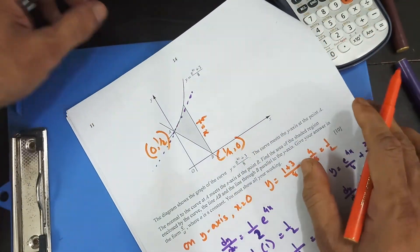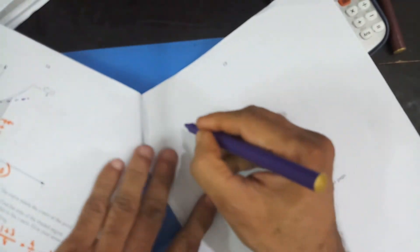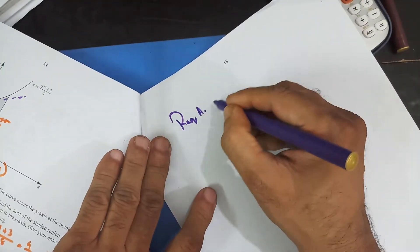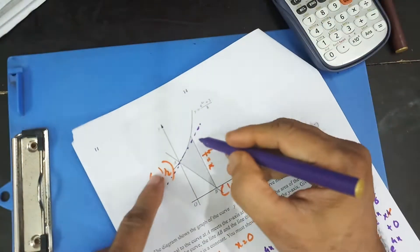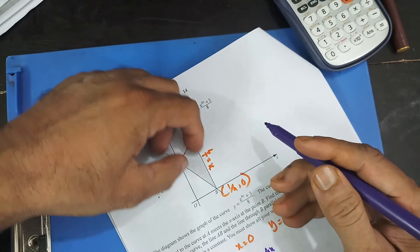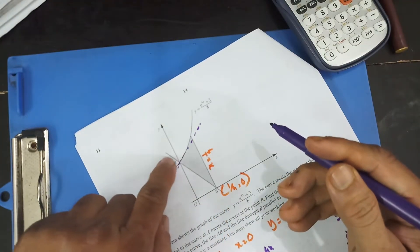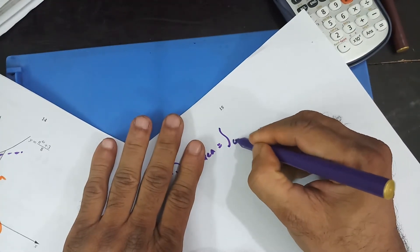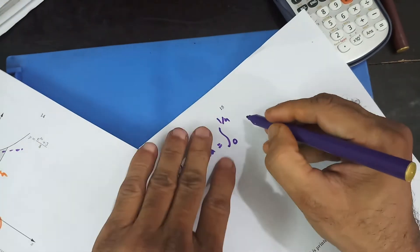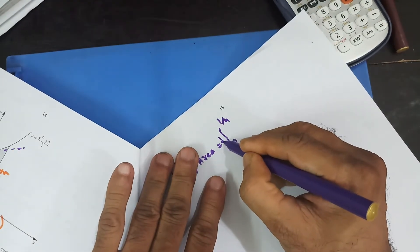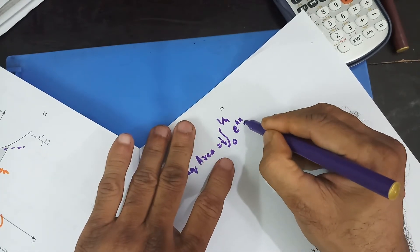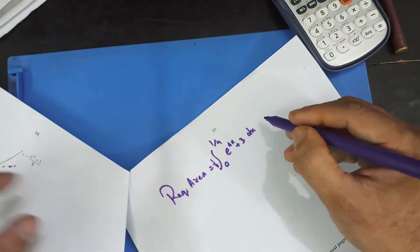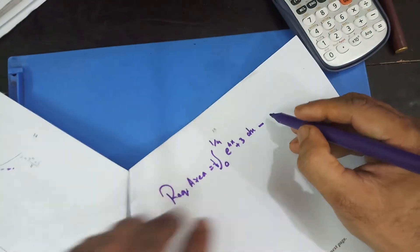Now we know everything. We're ready to use integration to find the shaded area. The required area equals the area under the curve from 0 to 1/4, minus the area of triangle AOB. So that's the integral from 0 to 1/4 of (1/8)(e^(4x) + 3) dx, minus the area of the triangle.